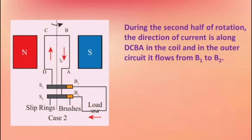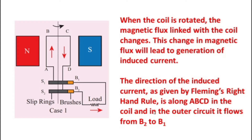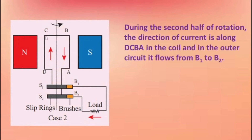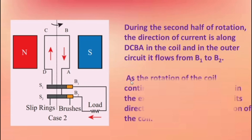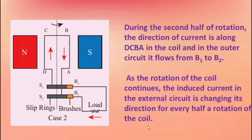The current direction is now changed. During the second half of rotation, the direction of current is along DCBA in the coil, and in the outer circuit it flows from B1 to B2. So in every half rotation, the direction of the current changes: in the first half rotation the current in the coil flows ABCD and in the outer circuit B2 to B1; in the second half rotation it flows DCBA in the coil and B1 to B2 in the outer circuit. As the rotation of the coil continues, the induced current in the external circuit changes its direction for every half rotation of the coil.